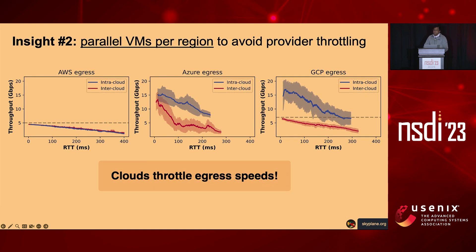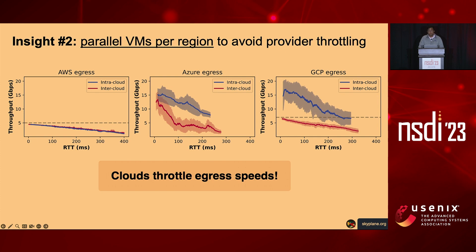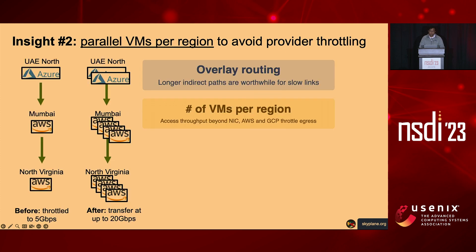The second insight comes from the observation that many clouds throttle egress speeds. AWS is perhaps the worst offender: looking at throughput versus round trip time, they throttle all egress traffic from any VM in AWS to 5 gigabits per second, applying this both for AWS-to-AWS and AWS-to-other-cloud transfers. GCP also throttles network traffic but only in an intra-cloud setting. In light of cloud provider throttling, we need to use parallelism to achieve higher throughputs. Before, we would have been throttled to just 5 gigabits per second; by dynamically varying the parallelism of resources, we can break past this throttling limit.